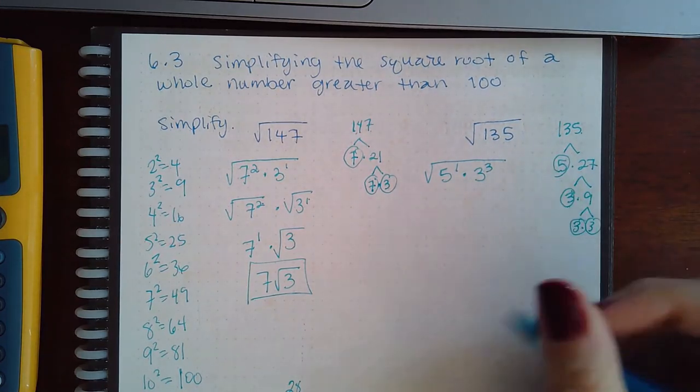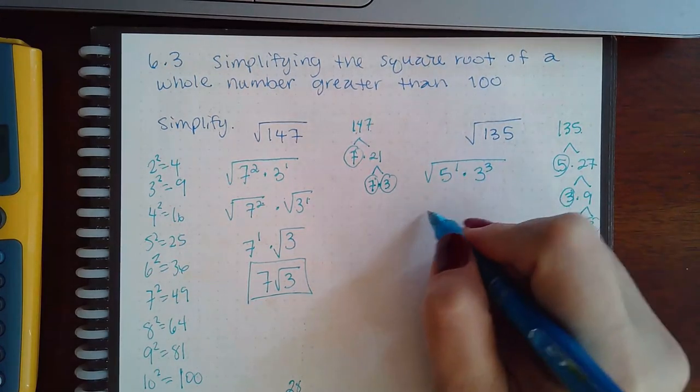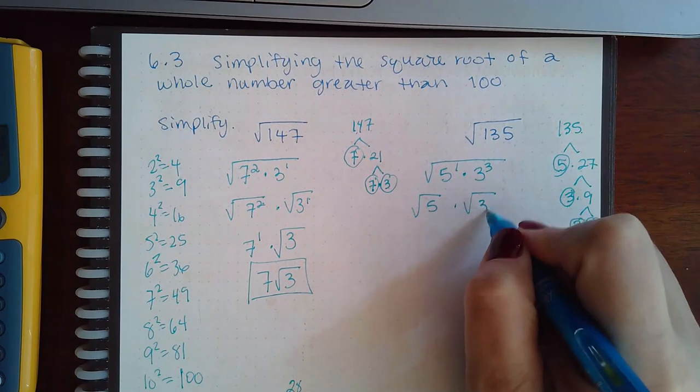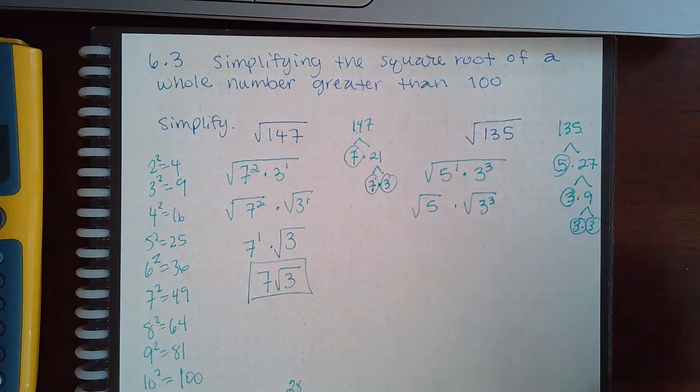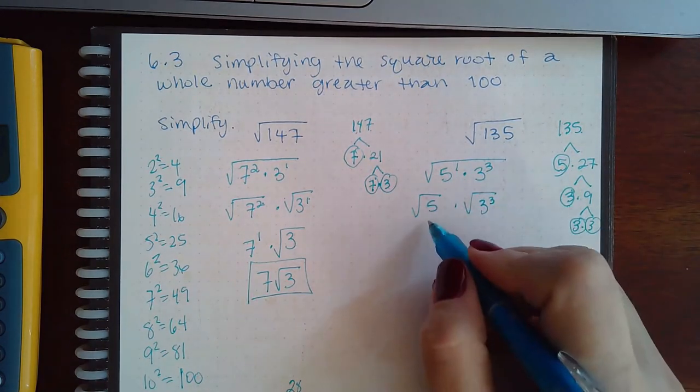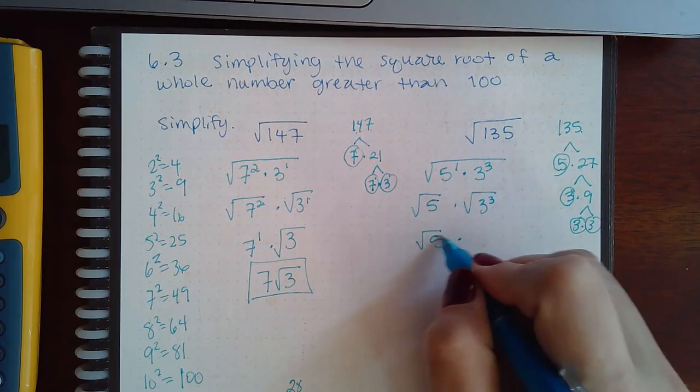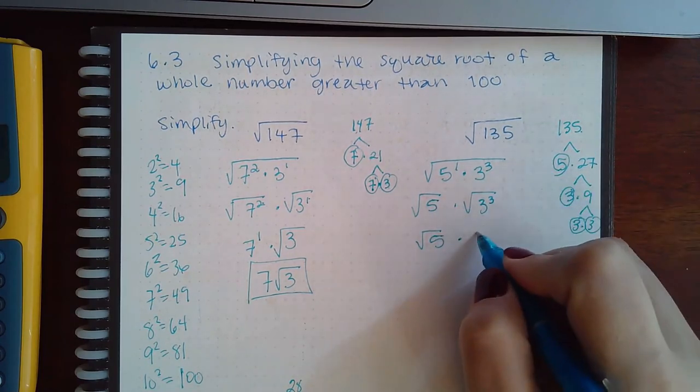Now here's something that we may or may not have discussed yet. Let's go ahead and split this up into square root of 5 times the square root of 3 to the 3 power. Square root of 5 is not going to change, it's going to stay the square root of 5.